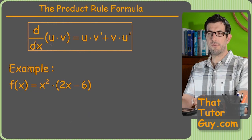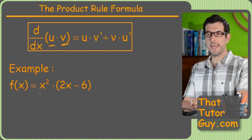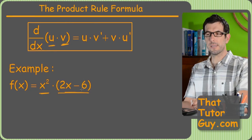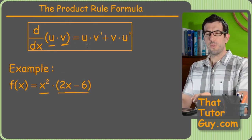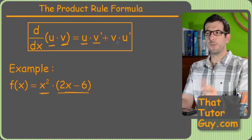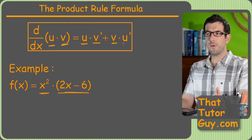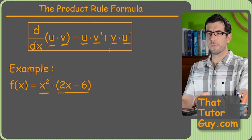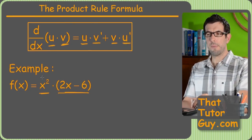So here's what it is. If you've got the derivative of something times something else, so like here's a problem where we've got x squared times 2x minus 6. The way you find this derivative is you take one of them times the derivative of the other and then you switch. Then you leave the second one alone and take the derivative of the first.